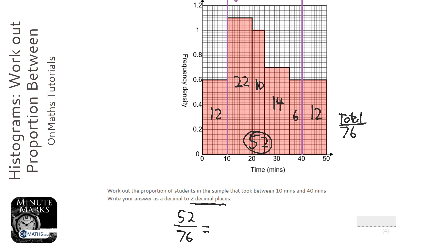So 52 divided by 76 is going to be 0.6842 and so on. So that's going to be 0.68 to two decimal places.